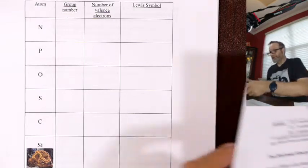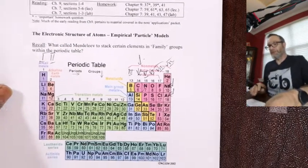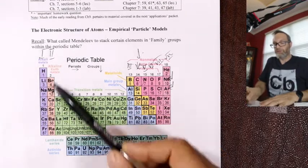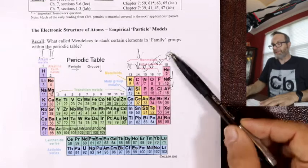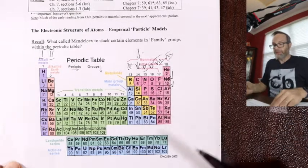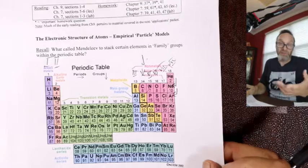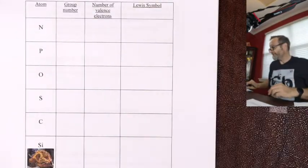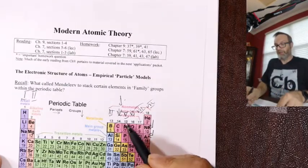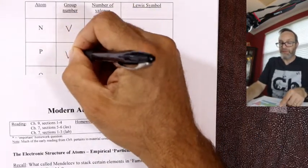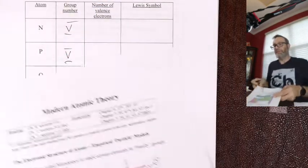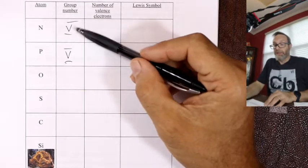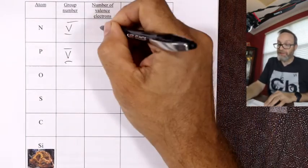Try and label your periodic table — column one, column two, group two, column three, group three, four, five, six, seven, eight. We like to talk about columns as groups or families, just with the Roman numeral number. So nitrogen is in column five, as is phosphorus — right underneath it. I put them in pairs on purpose. Column five, five valence electrons.